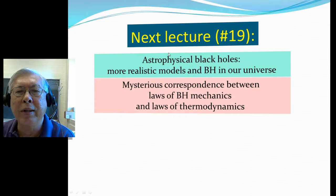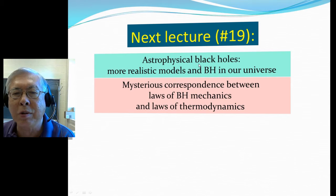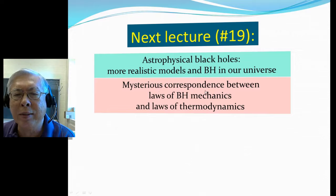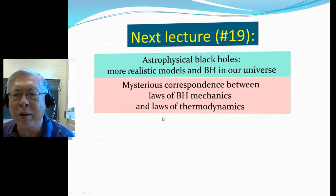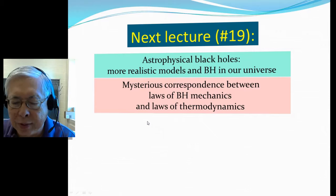For now all these black holes we talked about in some sense theoretical. So we wonder whether this can be realized in astrophysical settings. So we're going to talk about astrophysical black holes, more realistic models, and also black hole in our universe. And then we're going to a different topic, find the mysterious correspondence between the law of black hole mechanics and law of thermodynamics. And that will eventually lead to, we'll talk about Hawking radiation. This is the end of this part.